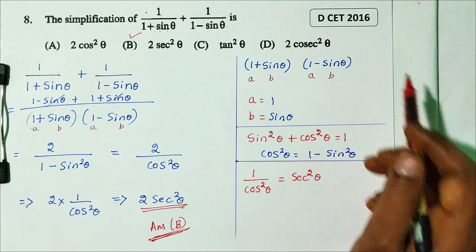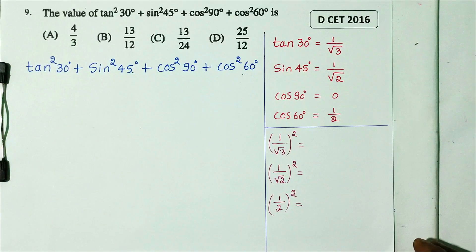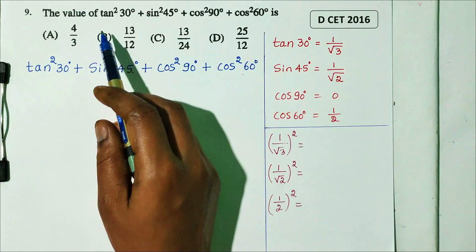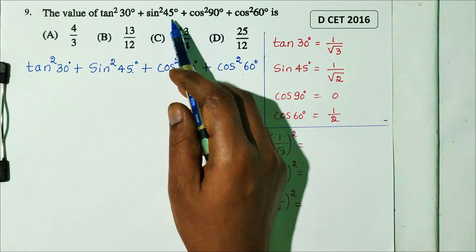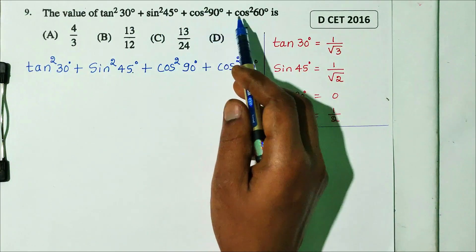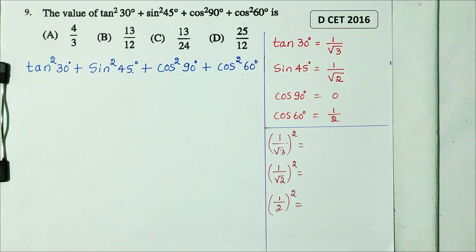Question number 9. The value of tan squared 30 degree plus sin squared 45 degree plus cos squared 90 degree plus cos squared 60 degree. DCT 2016 question. 4 options are there.